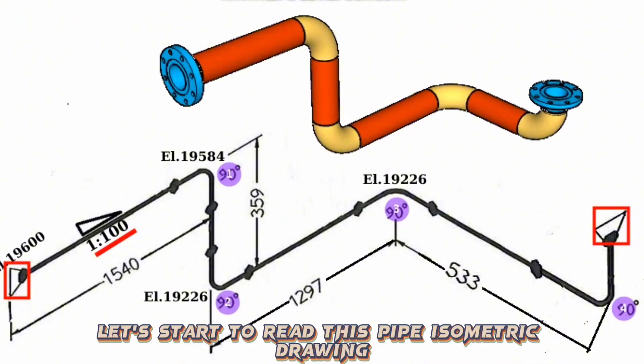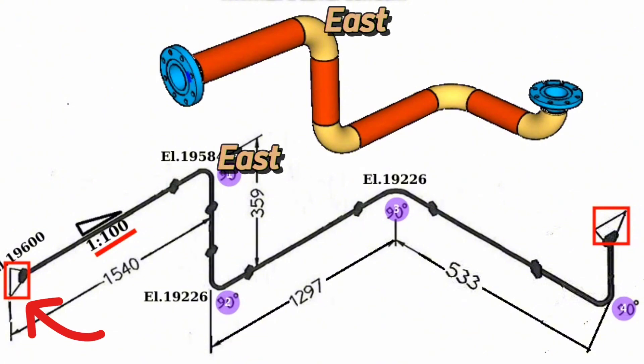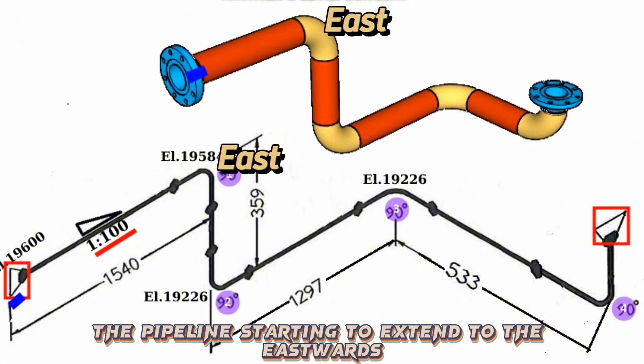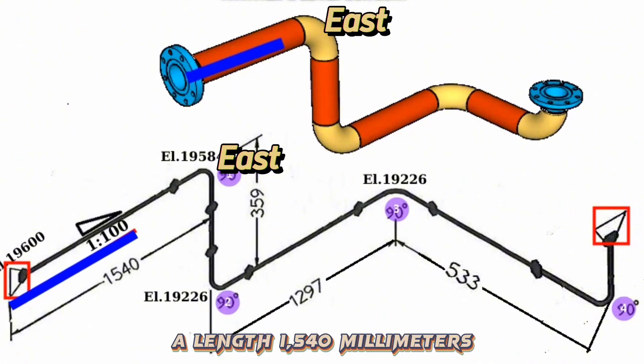Let's start to read this pipe isometric drawing from this flange. The pipeline starts to extend to the eastward for a length of 1,540 mm.